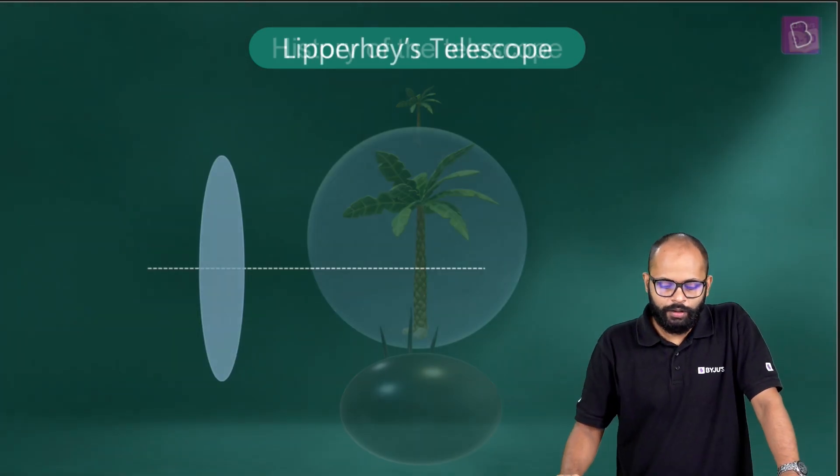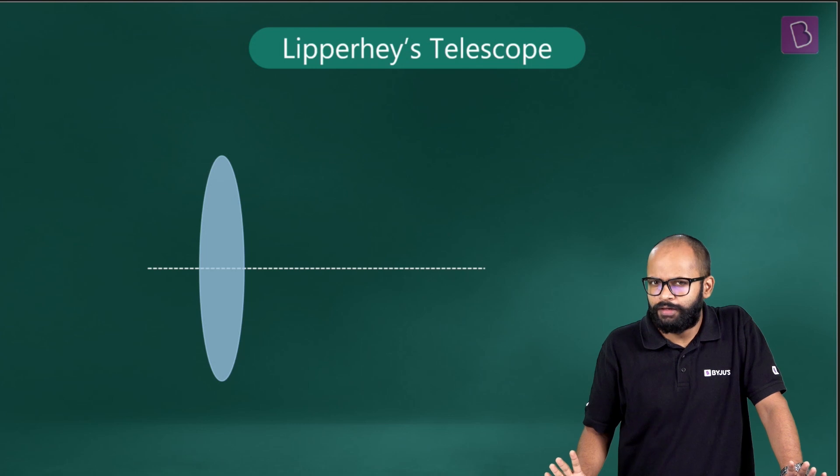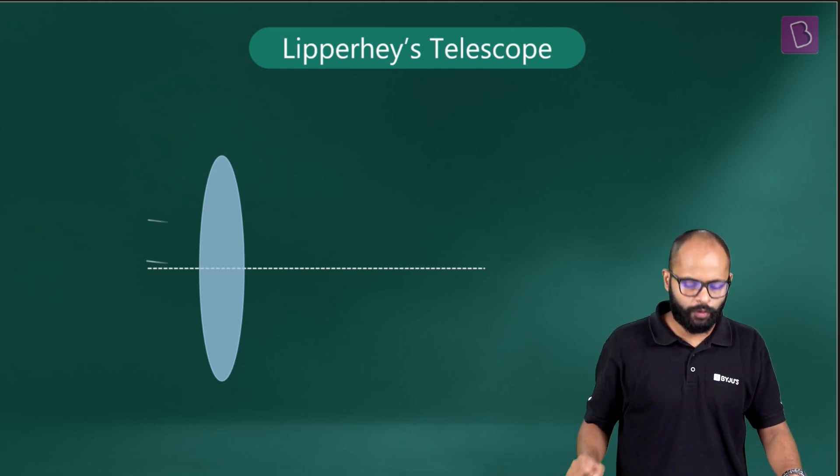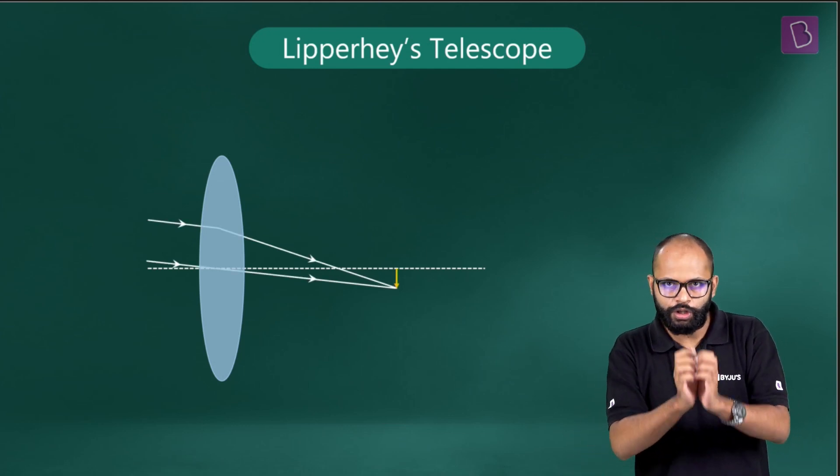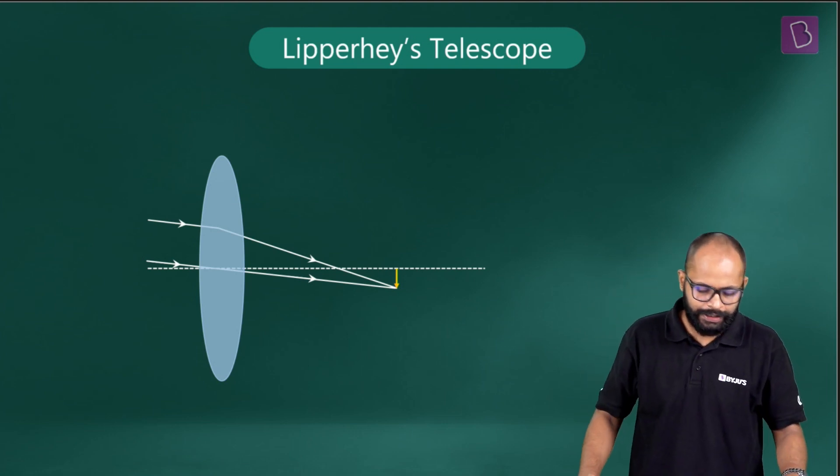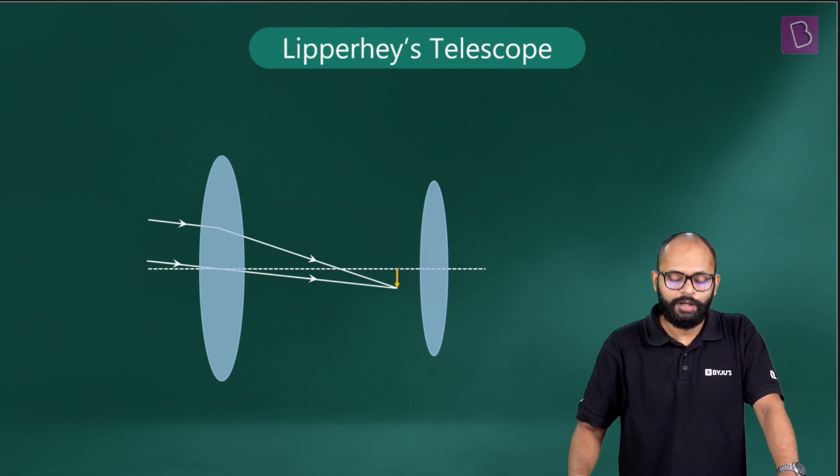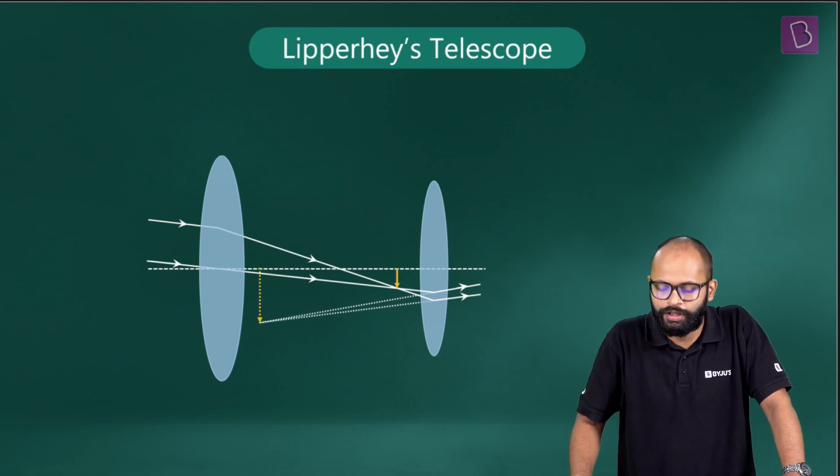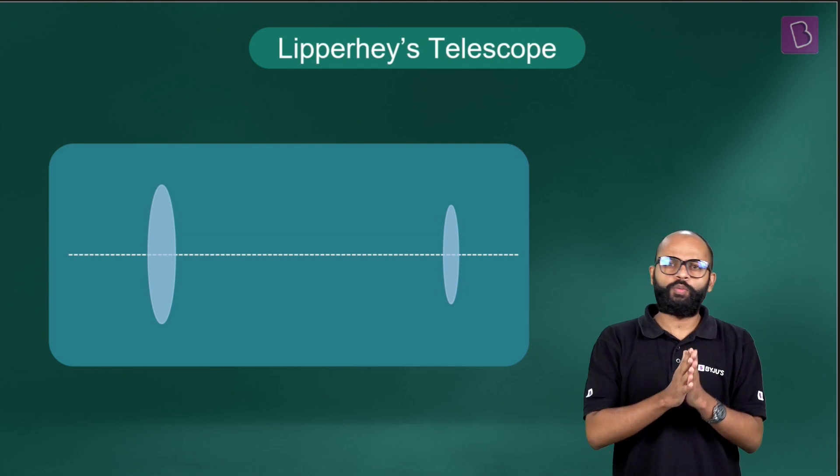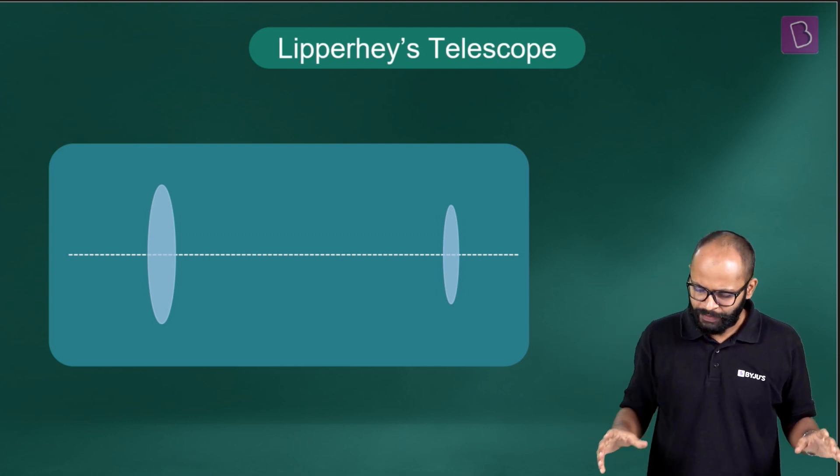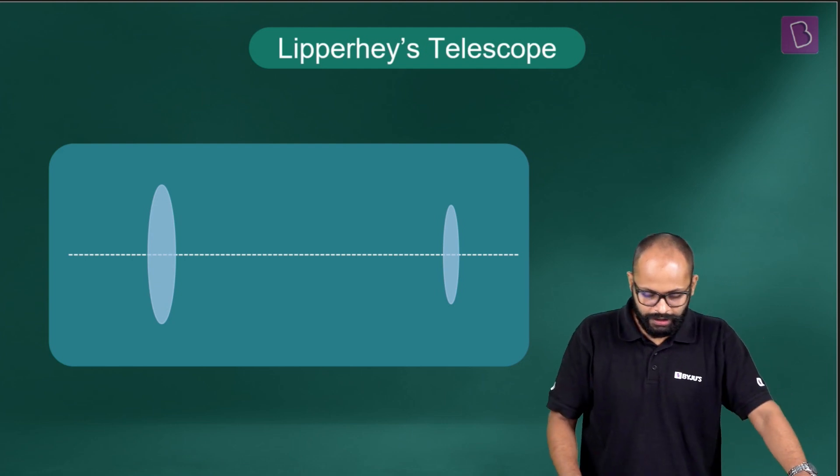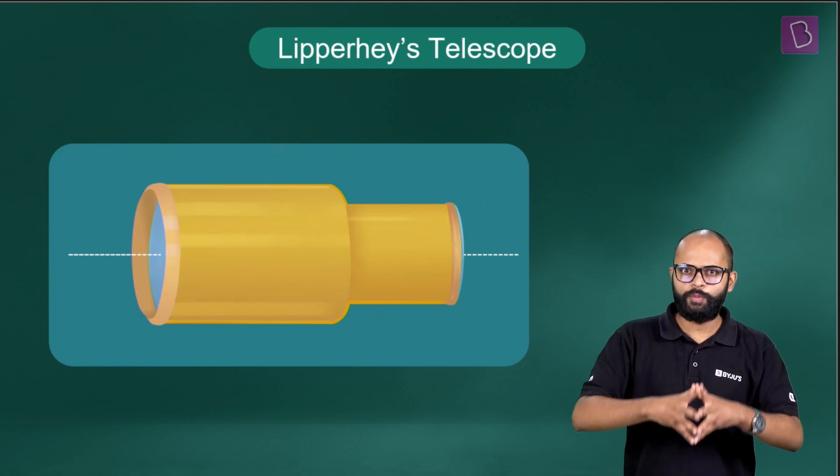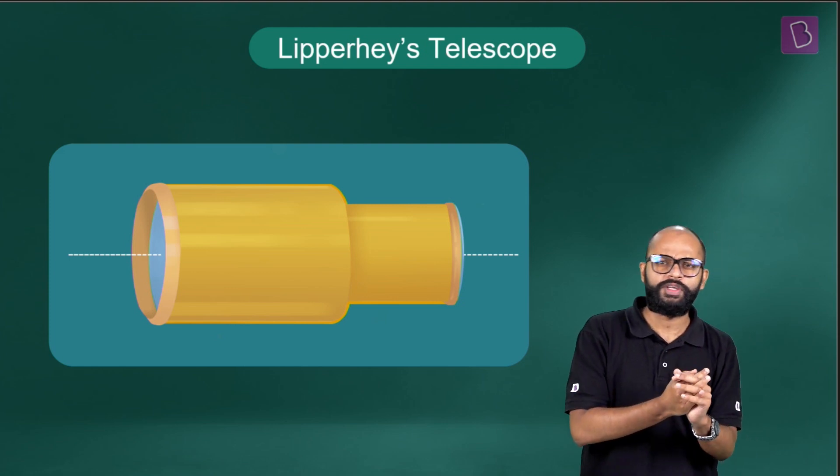This was the first basic telescope. The first lens was a convex lens whose job was to create an inverted image of the far object. The next lens used this image and made it bigger. Lippershey's telescope was quite good and simple. He created a case for it, and we called it the Dutch perspective glass.